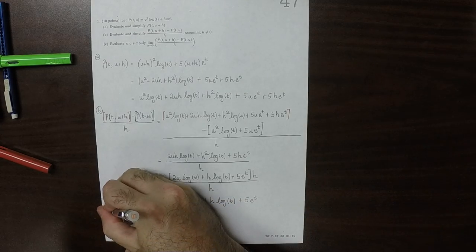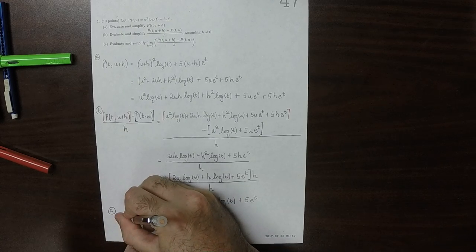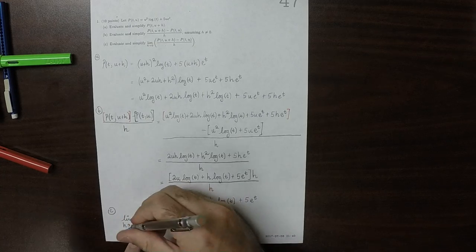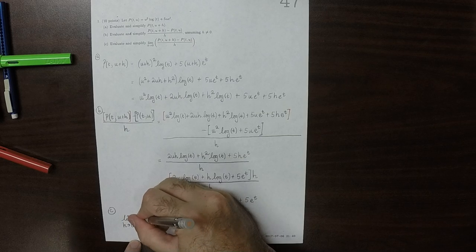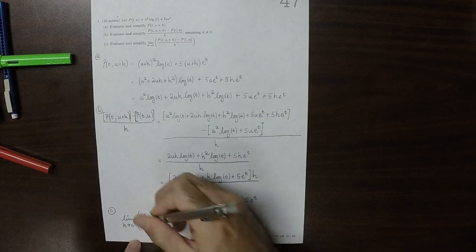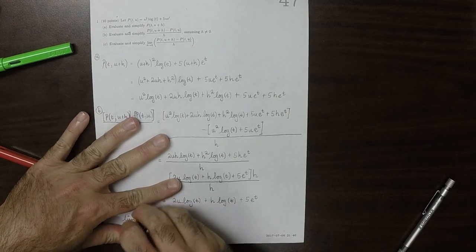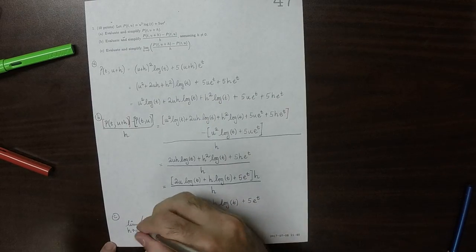And then for part C, the limit as h goes to 0 of all of that stuff. So I have to say, just copy all that stuff down in there.